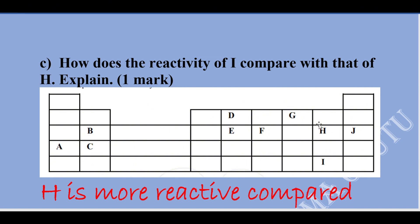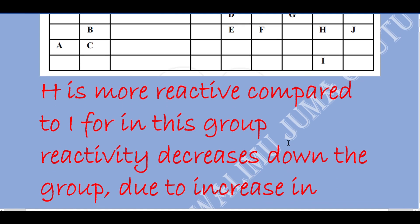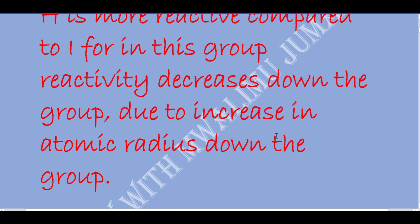This is because of the increased number of energy levels. As you move down the group, there is an addition of an occupied energy level. So H is more reactive compared to I. Reactivity decreases down the group due to increase in atomic radius. As we move down, the number of electrons increases and an extra energy level is added. For example, fluorine has two energy levels, and the next halogen has three energy levels.